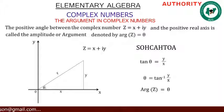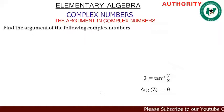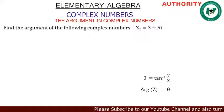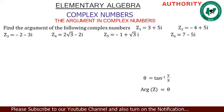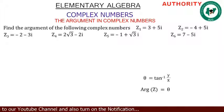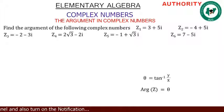For z = x + iy, the amplitude or argument θ = tan⁻¹(y/x). Now let's find the argument of the following complex numbers: z1 = 3 + 5i, z2 = -4 + 5i, z3 = -2 - 3i, z4 = 2√3 - 2i, z5 = -1 + √3i, z6 = -5i. Please pay attention.